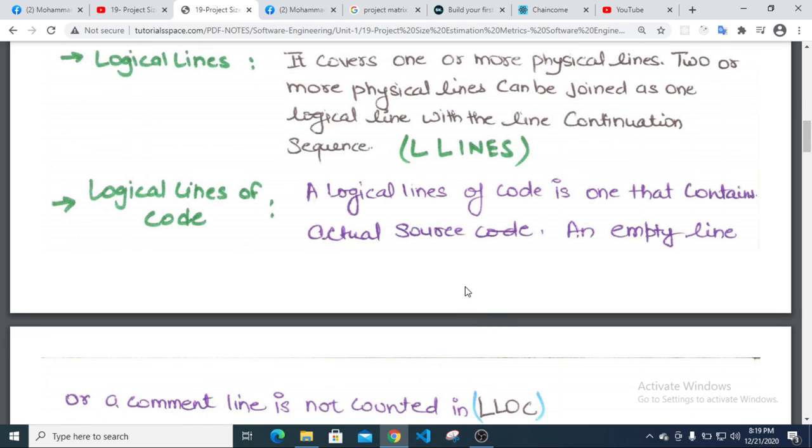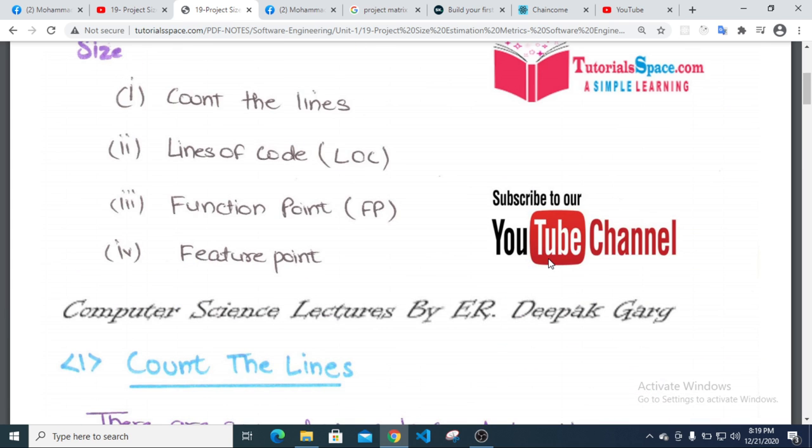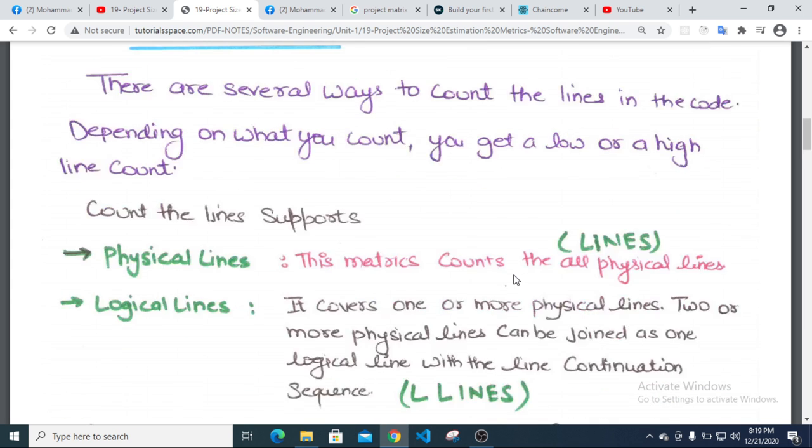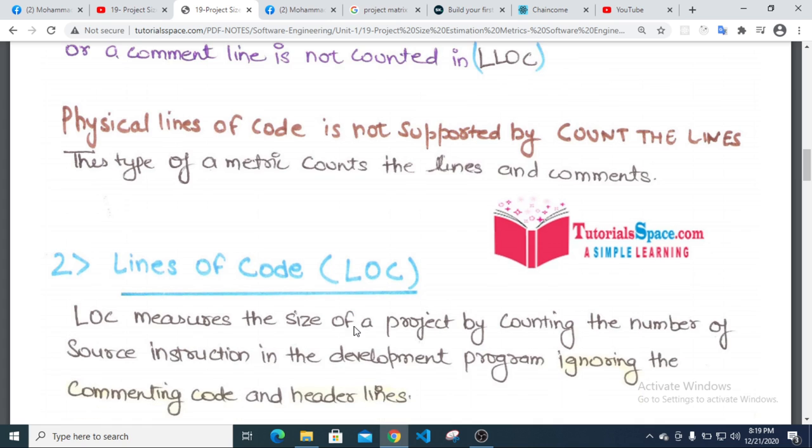Logical line of code is one that can contain actual source code. An empty line or comment line is not counted as logical line of code. Different line metrics give different size estimates. Physical line of code is not the same as logical line of code.